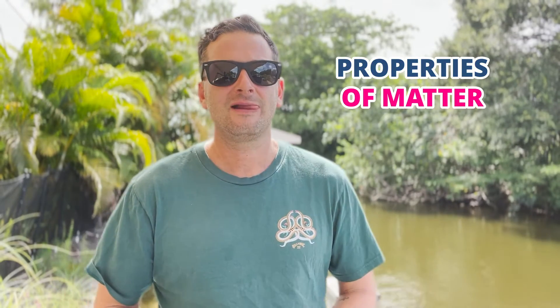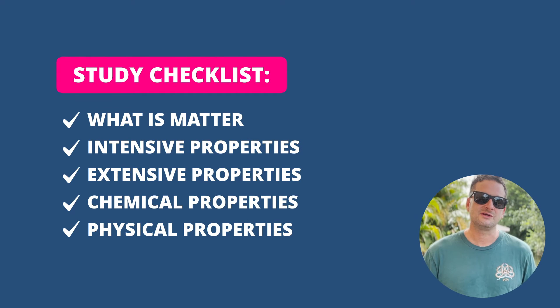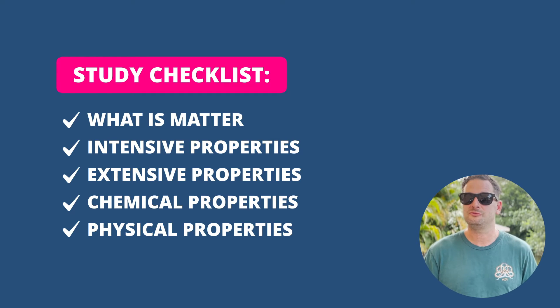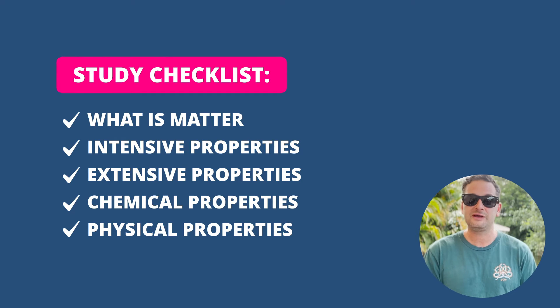For properties of matter, you need to know what matter is and understand physical and chemical properties. Physical properties are things like mass, volume, density, color, and solubility. Chemical properties are things like acidity, toxicity, rust, combustibility, and flammability. You've also got extensive and intensive properties, so be familiar with all of that when it comes to properties of matter.